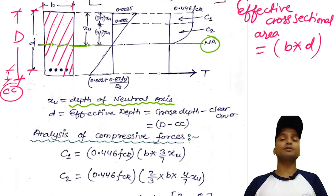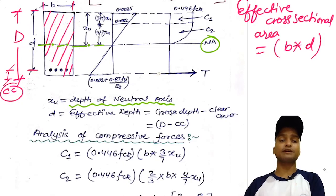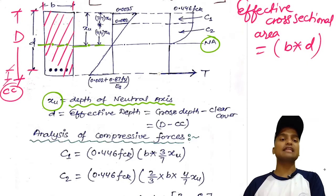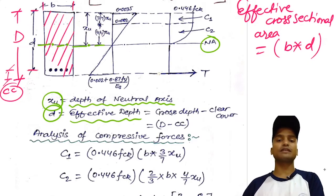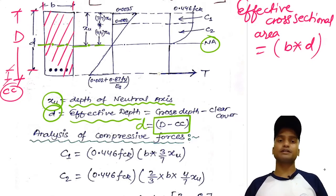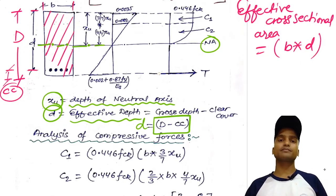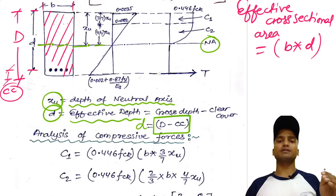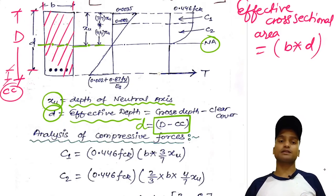The depth of the neutral axis is always calculated from the top and is represented by XU. The effective depth equals gross depth minus clear cover. The possible range for clear cover is 30 mm up to 60 or 70 mm. The clear cover is the distance between the center of the reinforcement bars and the bottommost fiber of the cross section.